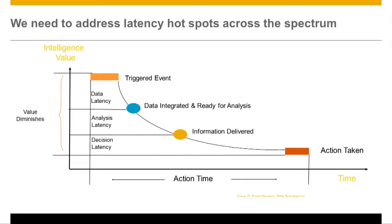The point of reference is that collectively, either as consumers or as enterprises, we're generating a lot of data — but what are we actually doing with that data? There was some great research carried out by Dr. Richard Hackathon. He looked at this in terms of trying to understand where the latency exists at the various points in time from when we actually store data to when we actually make a decision against it. On this graph, on the time continuum, you see an event occurring, a triggered event, and some action being taken. The three dimensions of latency that we all encounter are data latency, analysis latency, and decision latency.